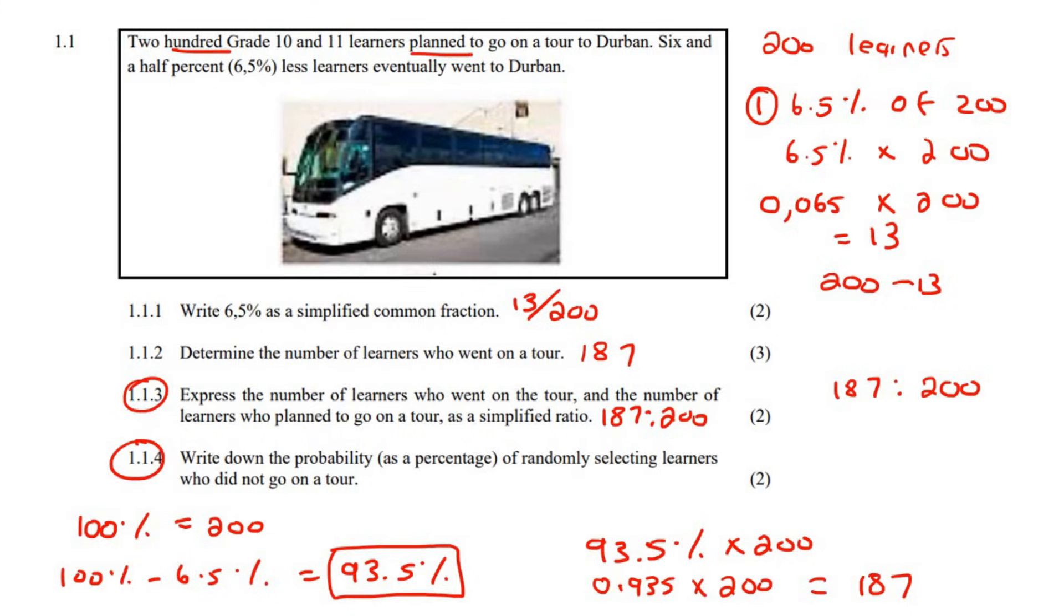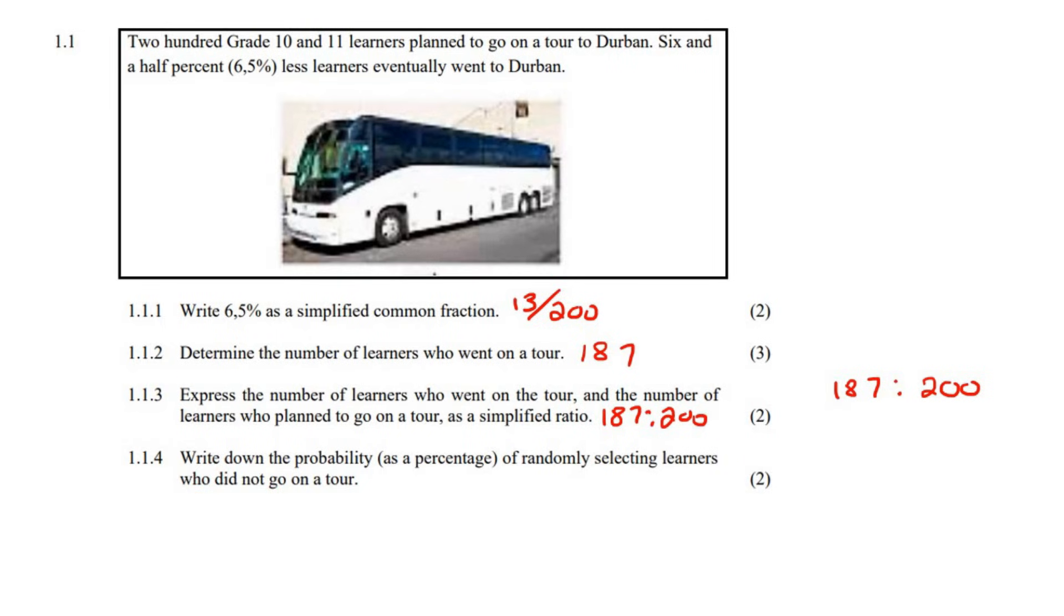This question, write down the probability as a percentage of randomly selecting learners who did not go on tour. So remember, probability is always going to be over the total. So we're going to say over, and the total is 200 people. Now, what goes at the top over here? Well, we've got to look at what they want. Write down the probability of selecting learners who did not go. So how many people did not go? That was 13. So you're going to say 13. Now, you could leave it like that if they wanted it as a fraction. But because they want it as a percentage, you're going to multiply by 100. And then you're going to get 6.5%. But that shouldn't surprise us because we already had it as 6.5%. That's a bit of a silly question.